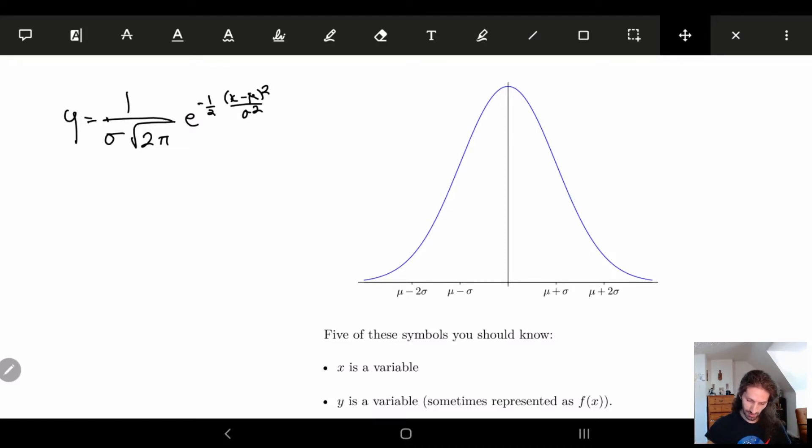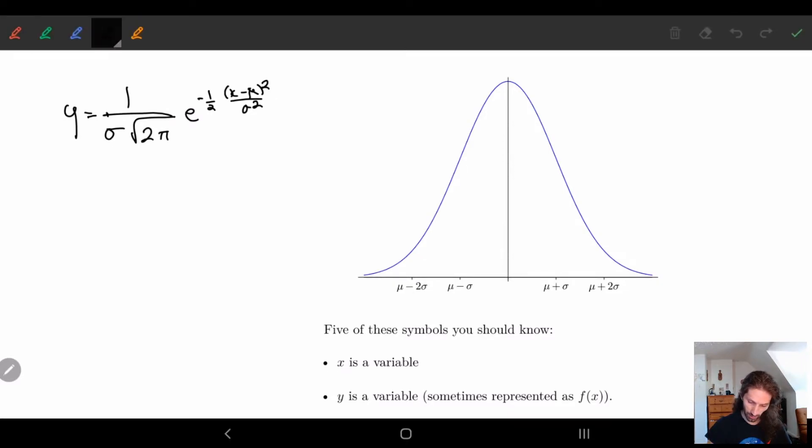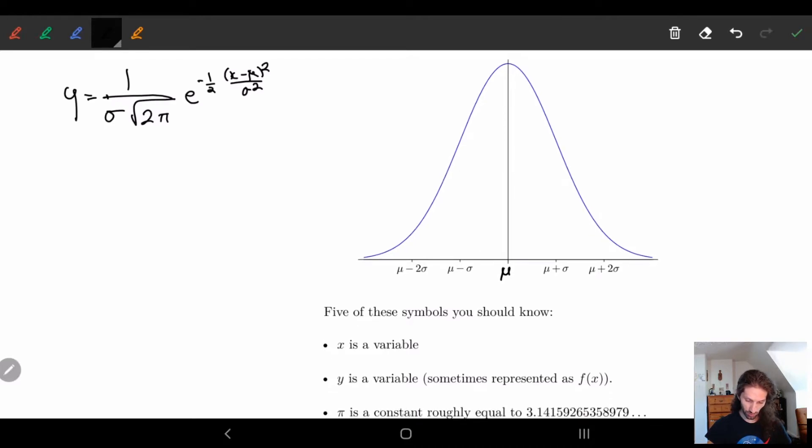And what you're going to notice is here in the middle, we kind of have mu. So it's centered around mu. And most of these variables we've seen. x, we already know this is a variable. y, we also know this is just a variable. A lot of times this is seen as f of x. You're probably used to seeing this as a function f of x. We'll leave it y for now.